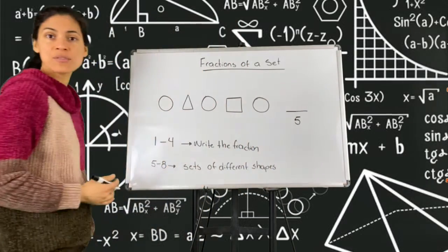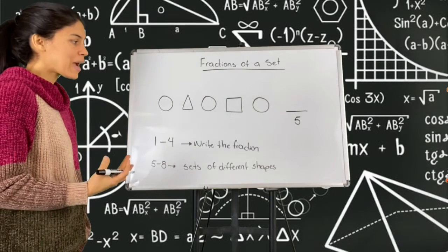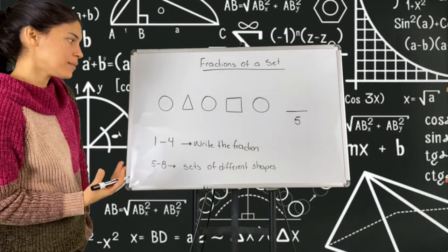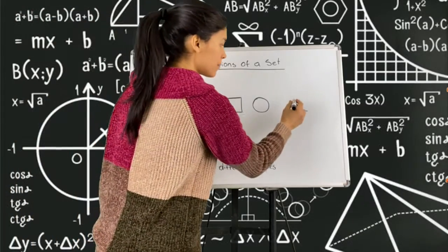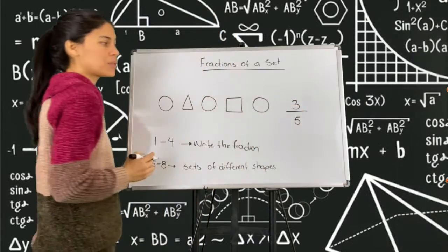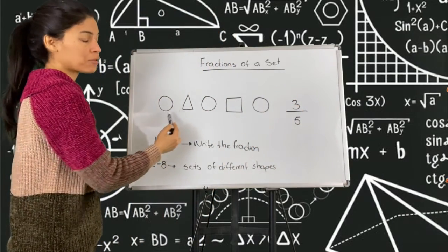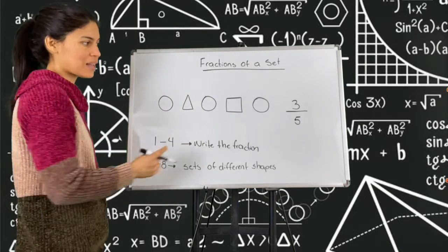If I want to represent or identify the circles here, I would say there are three circles. That will be my numerator, my top. So three out of five shapes in this set are circles. That's what this fraction is telling me.